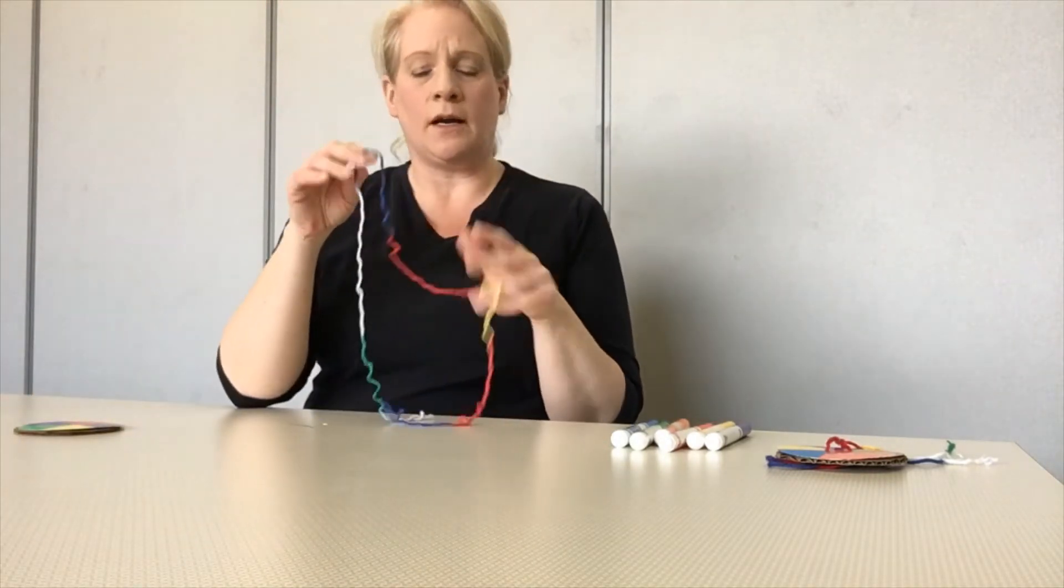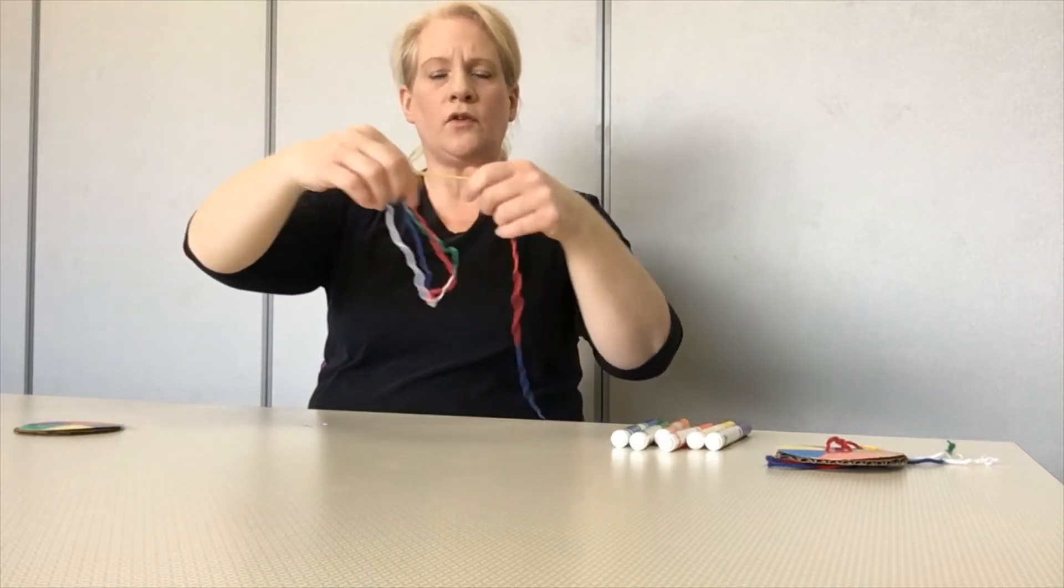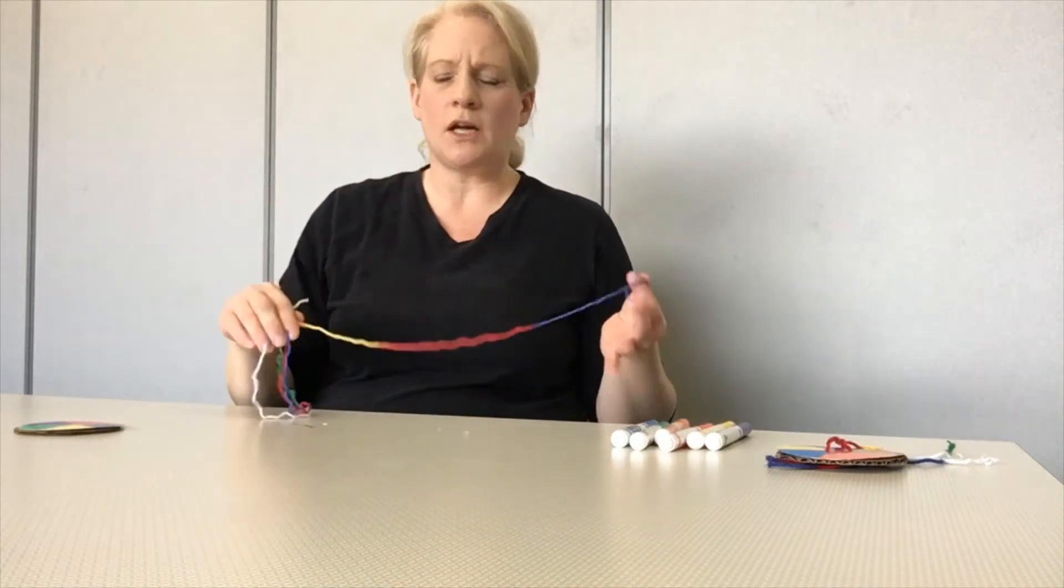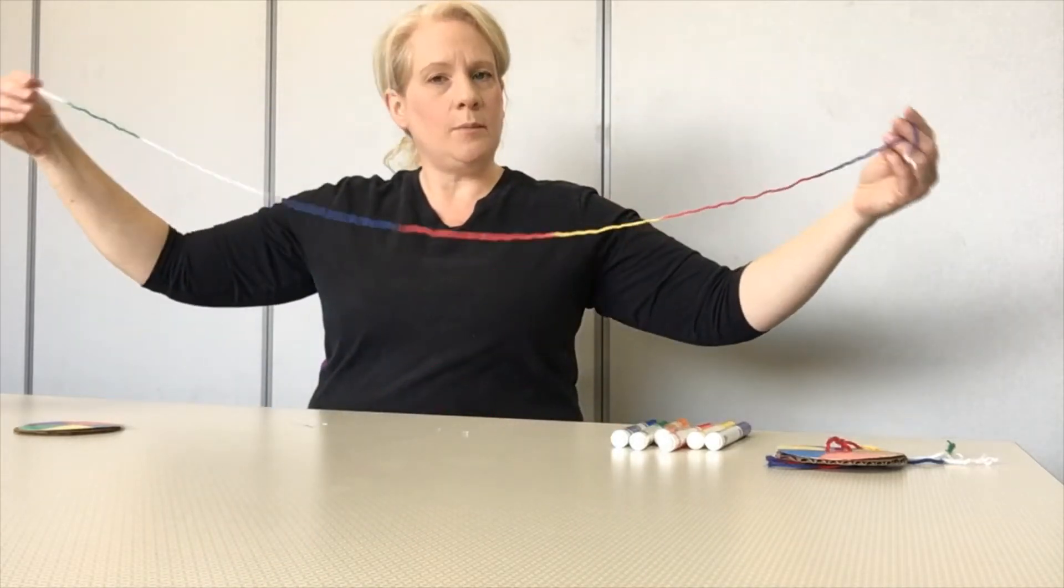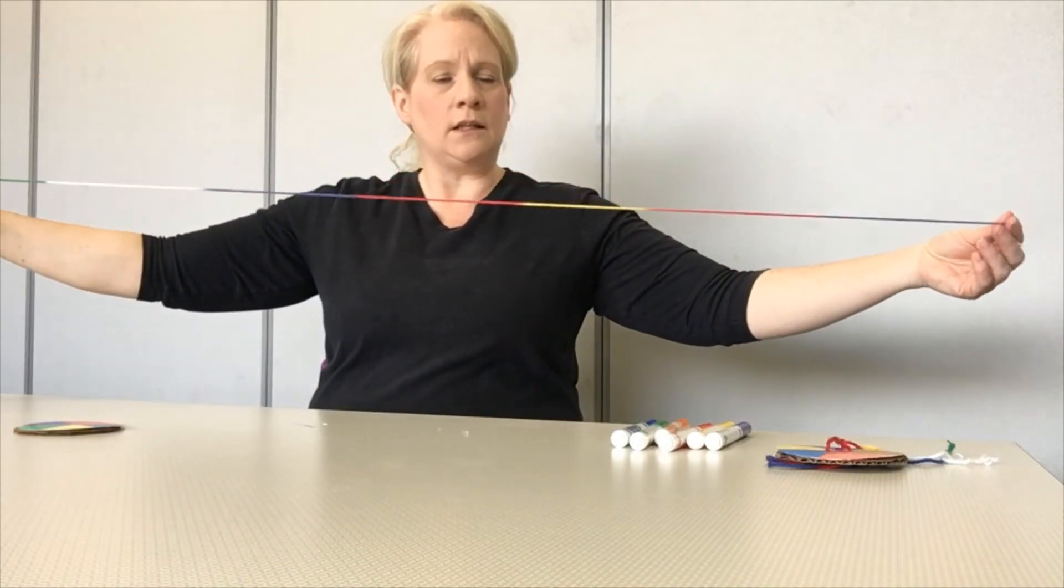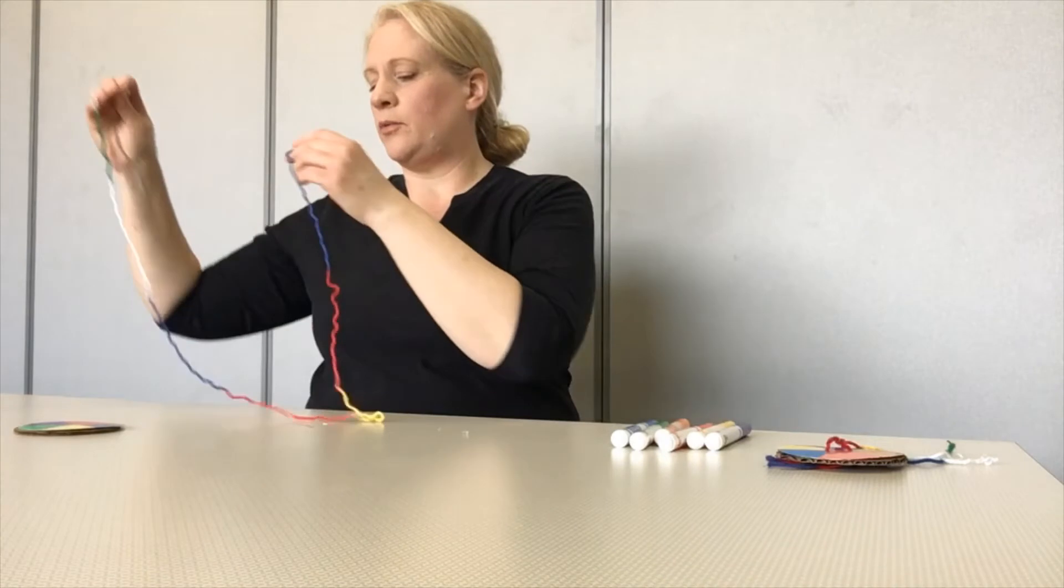Now, set those aside for a minute. The next thing we're going to need is some yarn. Now, my yarn is very colorful. It's like a rainbow yarn. It doesn't matter which color you use. This is just the color I had. You're gonna want to cut a piece of yarn about three feet long. Measure that out about three feet.